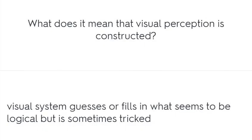What does it mean that visual perception is constructed? The visual system guesses or fills in what seems logical, but is sometimes tricked.